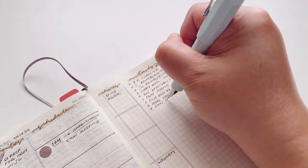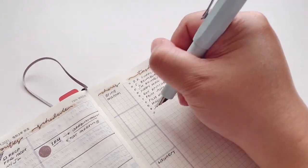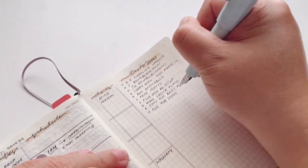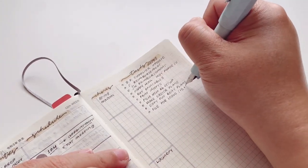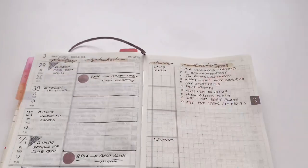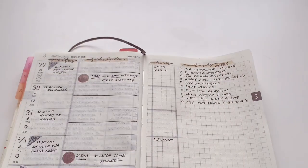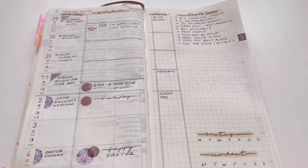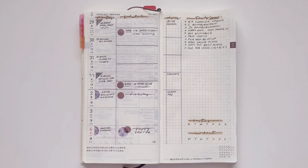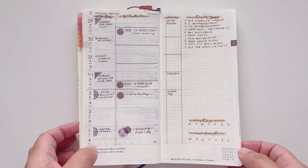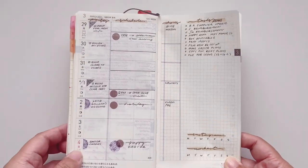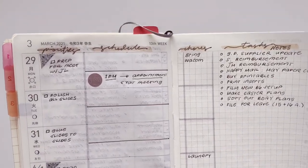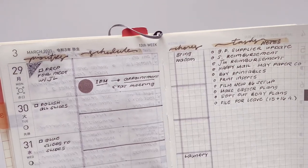And this is quite a minimal spread for me even though I am a minimalist planner. This has barely any stickers and I quite like how it looks. And this is the page complete. Now it looks a little empty but as soon as the week starts I'm sure I'm going to be writing a lot of things down on these empty spaces.